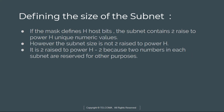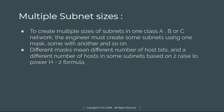If the mask defines H host bits, the subnet contains 2 raised to the power of H unique numeric values. However, the subnet size is not 2 to the power of H — it is 2 to the power of H minus 2, because two numbers are reserved for other purposes.